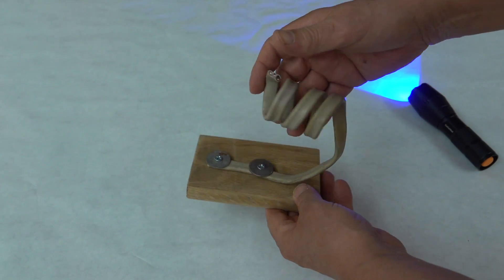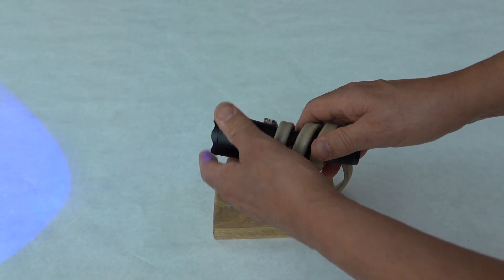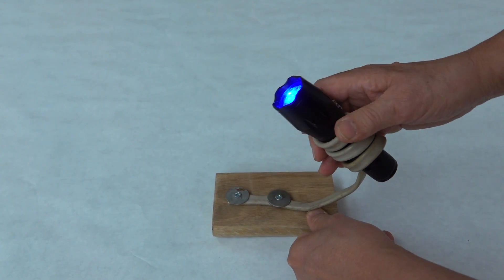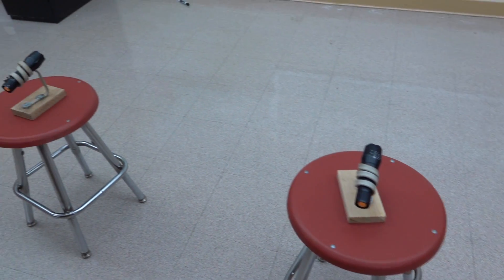I made adjustable holders for each flashlight out of a wooden block and some wire. There we go. To make the colored shadows I simply position the flashlights at different angles and broadcast them up onto the wall.